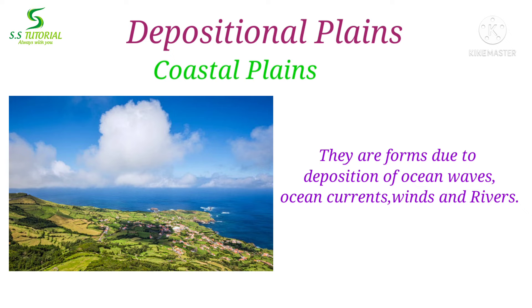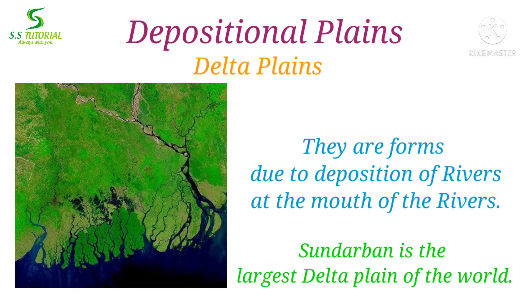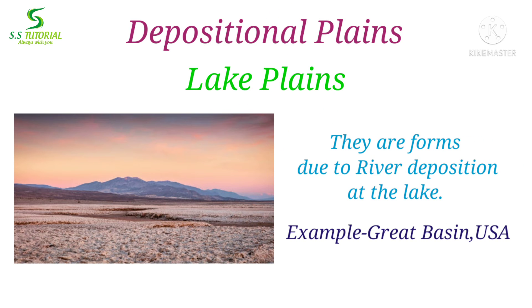Coastal plains can be found in almost every continent. When sediments, silt, sands, mud, etc. are deposited at the mouth of a river and over time a plain develops into the ocean or sea, they are called delta plains. The Sundarbans delta, or the Ganga-Brahmaputra delta, is a notable example of a delta plain. When those plains are developed into a lake, they are called lake plains. The Great Basin of the USA is a notable example of a lake plain.